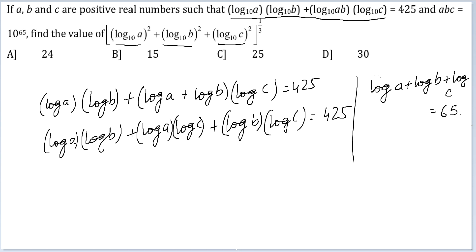Now what I am doing is I am taking log a as x, log b as y and log c as z. Effectively, I have x + y + z is equal to 65 and xy + yz + xz is equal to 425. And finally, what I need is x² + y² + z² and I have to do something with it.